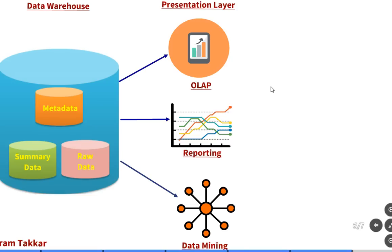Data from a data warehouse can be used by multiple tools and technologies. For example, OLAP — Online Analytical Processing — is an approach to answering multi-dimensional analytical queries. It enables users to analyze multi-dimensional data interactively from multiple perspectives. OLAP consists of three analytical operations: consolidation (also called roll-up), drill-down, and slicing and dicing. We'll cover each of these in detail in a separate OLAP video.